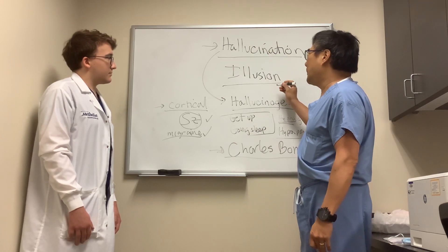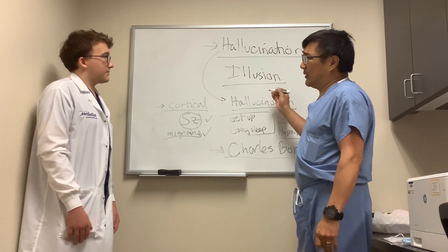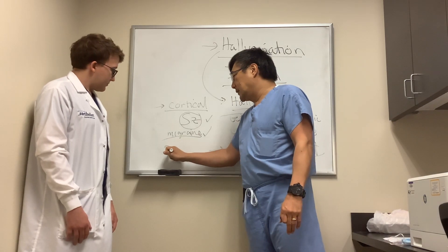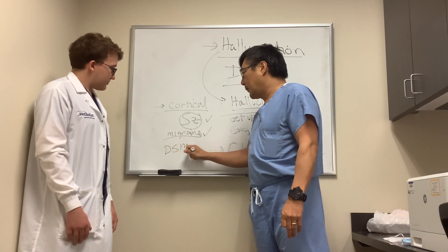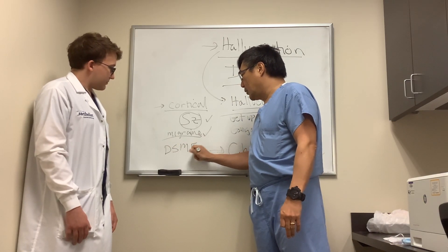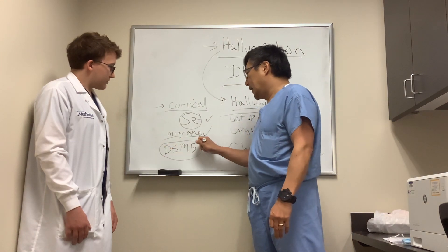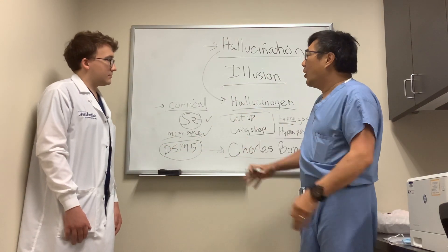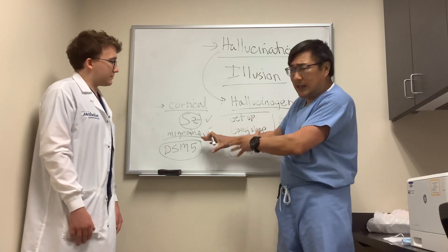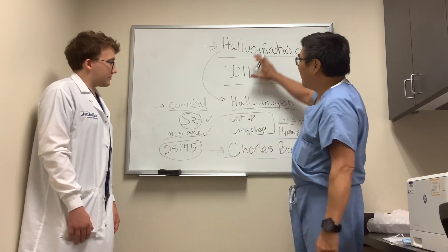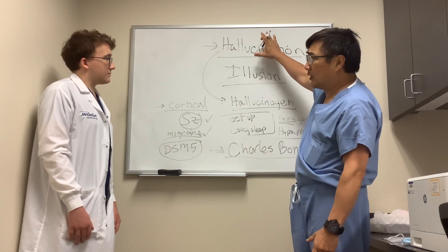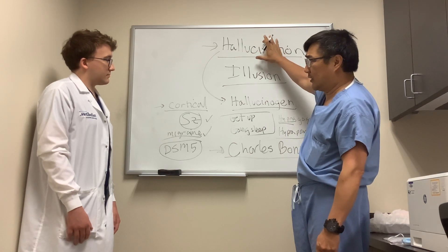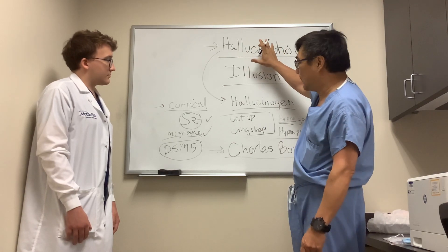People can also hallucinate because they have a psychiatric illness. In the Diagnostic and Statistical Manual number five, which is the way we categorize psychological illness, people who have schizophrenia or some other DSM-5 psychological disorder might have a visual hallucination. Sometimes those people also have auditory hallucinations — they hear voices and see people.